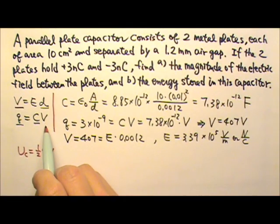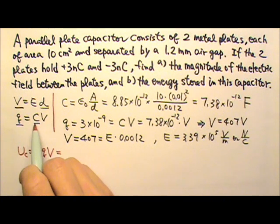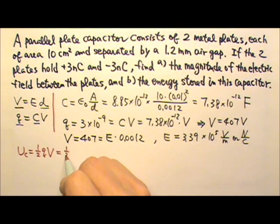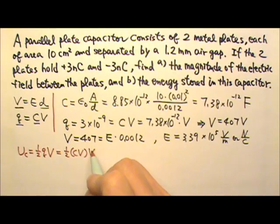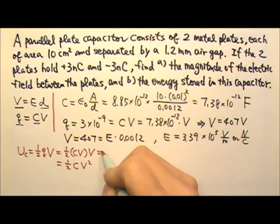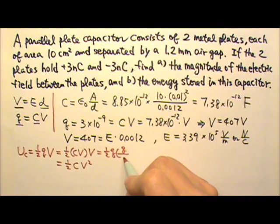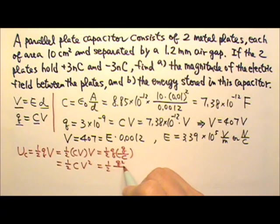Depending on which of those three are given, sometimes you may see people using this equation in different forms. For example, sometimes it can be convenient for us to replace the Q with CV. So this will be one-half CV times V, which gives us a form that's one-half CV squared. Sometimes it can be convenient for us to replace the V with Q over C. And this equation will be turned into this one-half Q and then Q over C. So this gives us one-half Q squared over C.